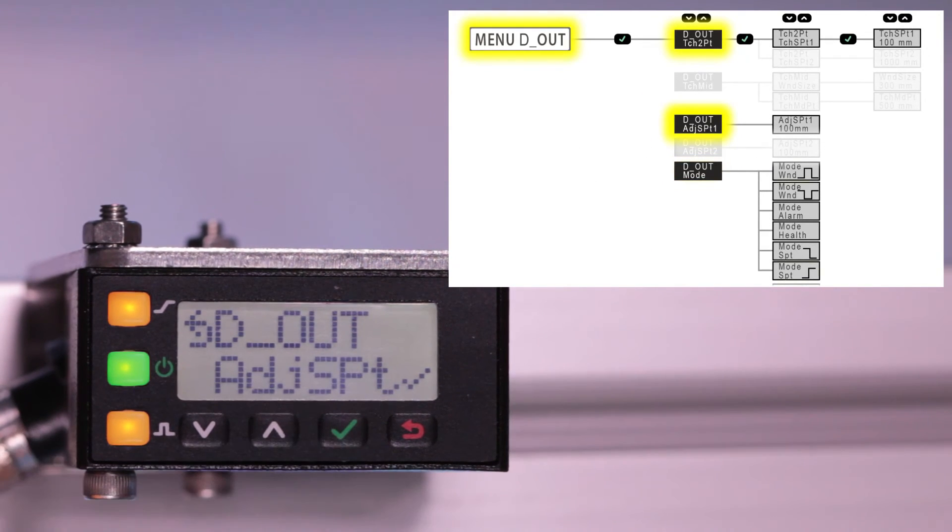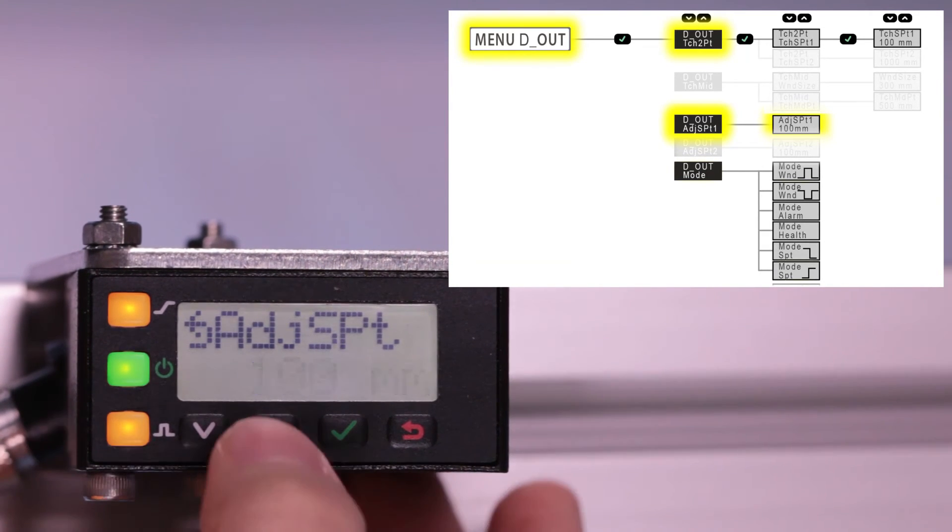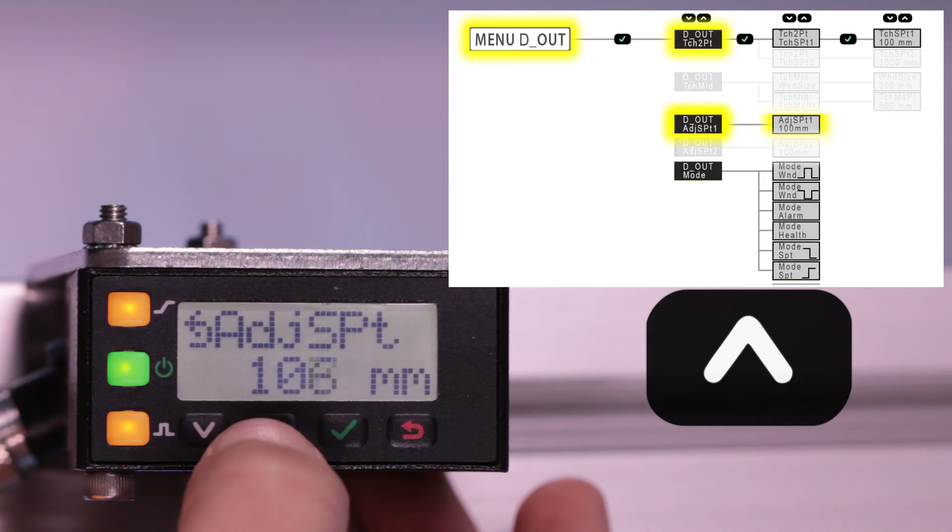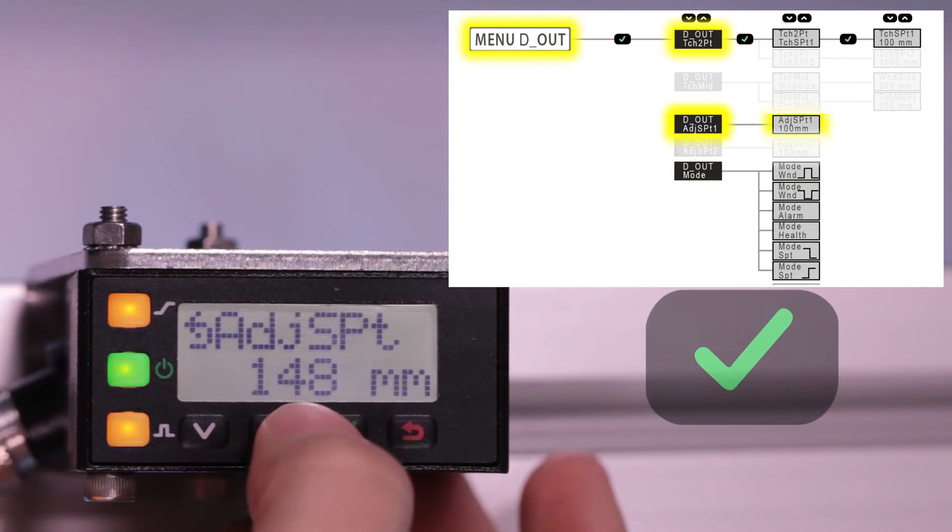Click up to go back to the adjust switch point menu option and click enter. The value will now start flashing, indicating that it can now be changed. Click up to move the switch point to 148mm.